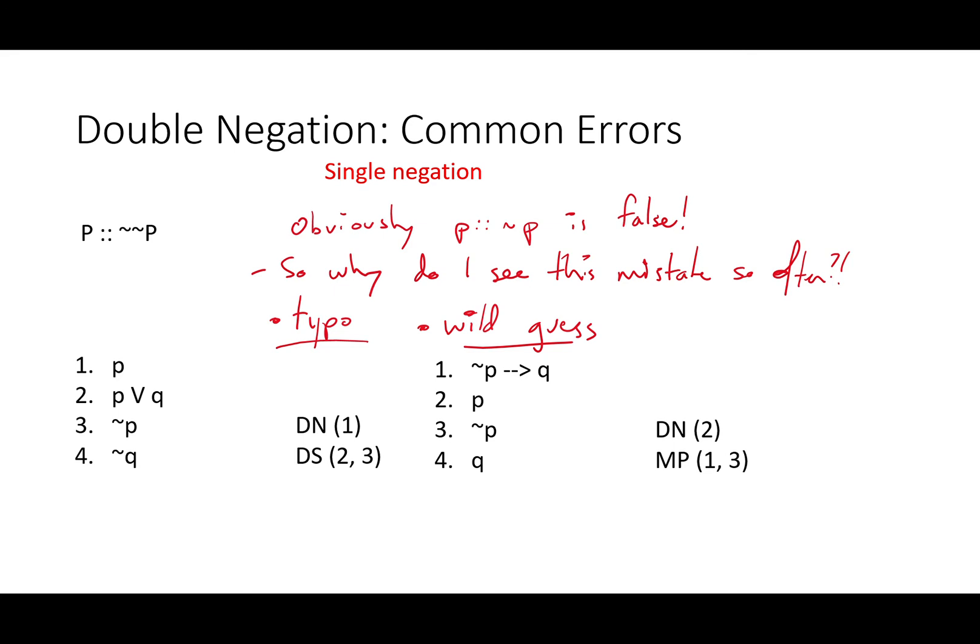When you're using double negation, you have to add two negatives. Adding one is not logically equivalent. It's taking the opposite.